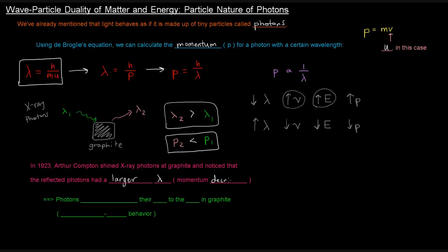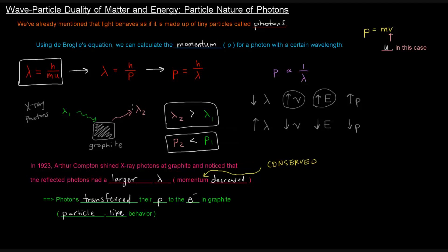Momentum decreased, and that's an issue because momentum is conserved, just like energy is conserved. If the photons are coming in with a certain momentum, where did the rest of the momentum go? What happened was that the photons transferred some of their momentum to the electrons in the graphite — which is a particle-like behavior. Light came in with a certain momentum and left with less because some was transferred to the electrons in the graphite, and that transfer of momentum is a particle-like property.